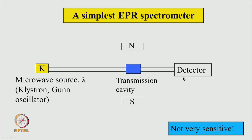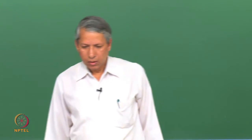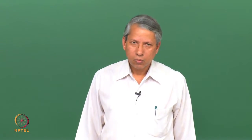This is not a very sensitive spectrometer. As I said earlier, the Q of this transmission cavity is very low. So, even though such spectrometers were used earlier, nowadays this type of spectrometer is never used. We almost always use a reflection cavity whose Q is much higher.